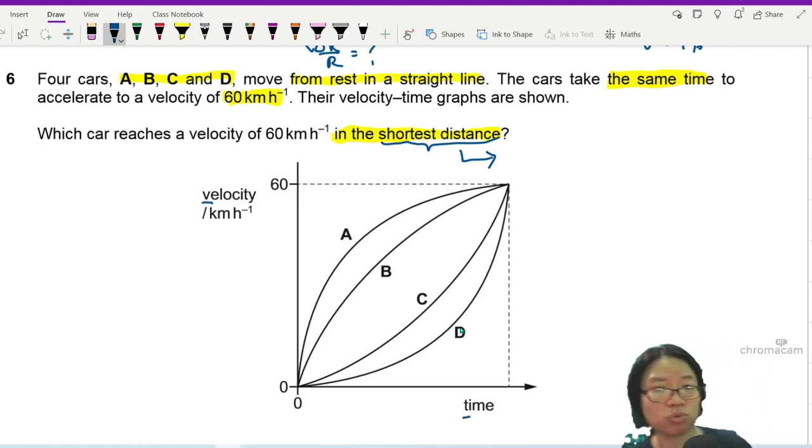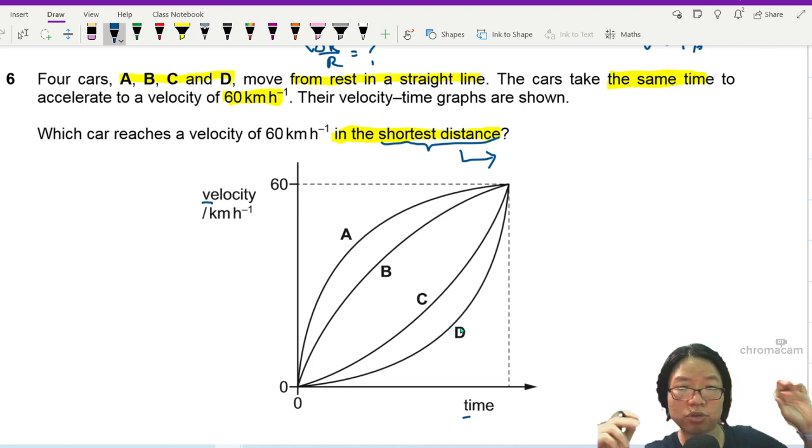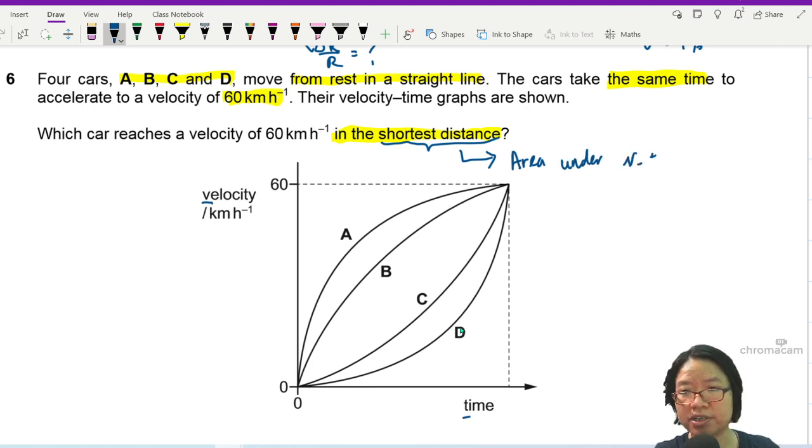Okay, hopefully you will know this by now that if you want to find distance from a velocity-time graph, you will take the area under a VT graph. So then the area under which curve is the smallest? Of course, the area under curve D.